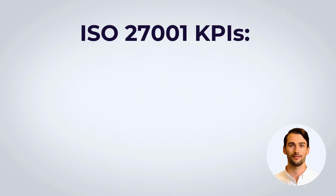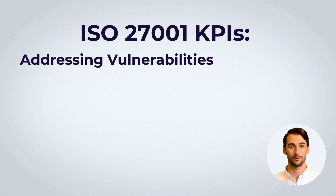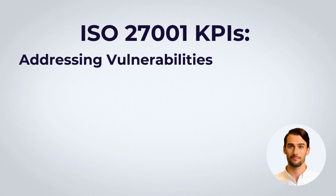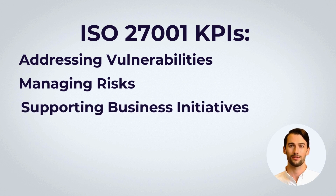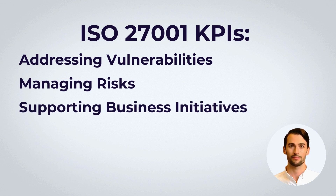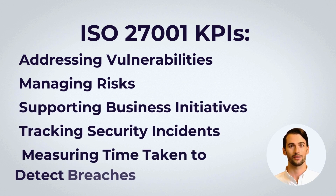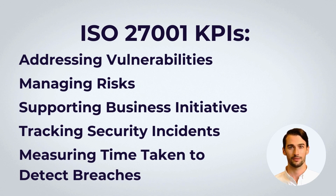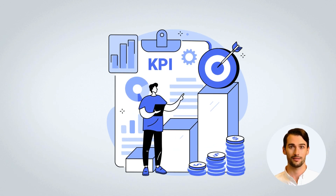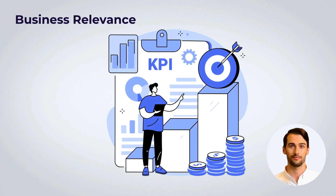Examples of ISO 27001 KPIs include addressing vulnerabilities, managing risks, supporting business initiatives, tracking security incidents, and measuring the time taken to detect breaches.